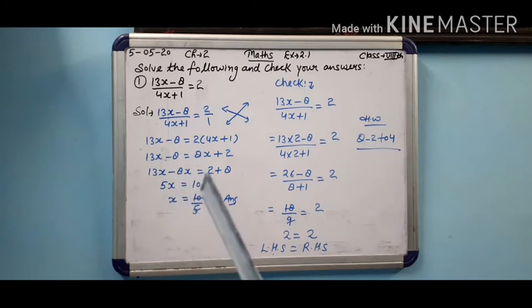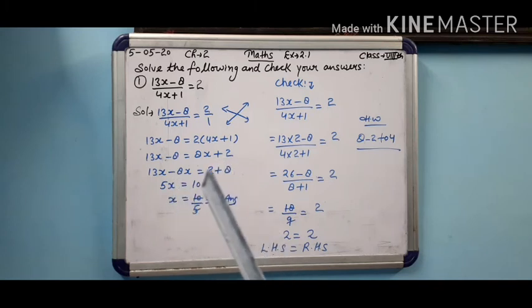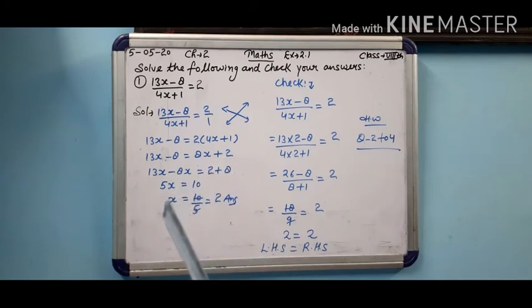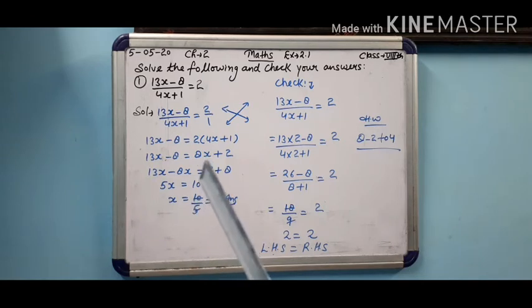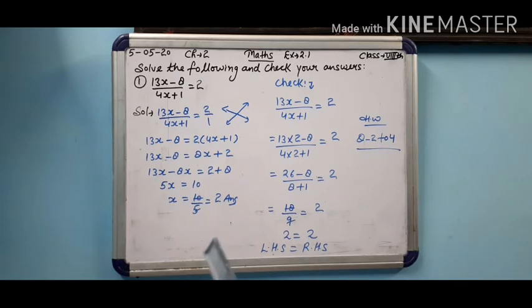5x is equal to. Aur 2 aur 8 kitne hote hain? 10. Ab x ko bahar nikalenge. 10 upon kya ho jaayega? 5 ho jaayega. Iska matlab 5 ki divide 10 se kar denge — x = 2.